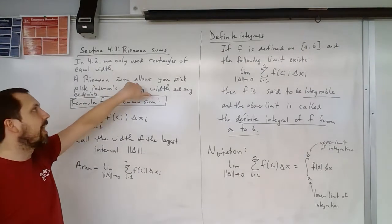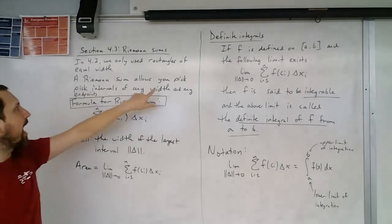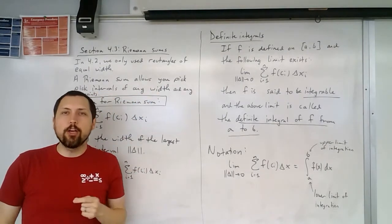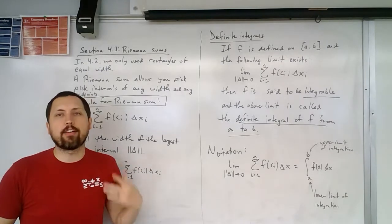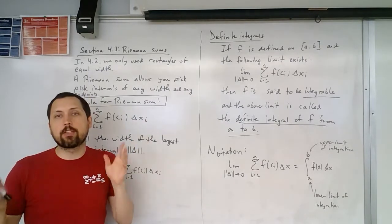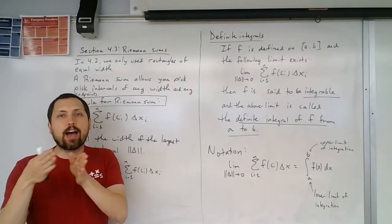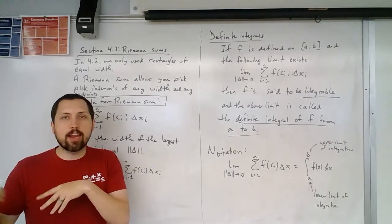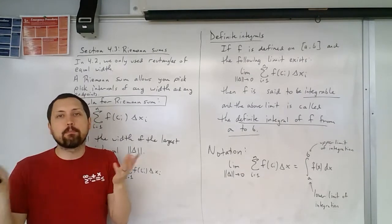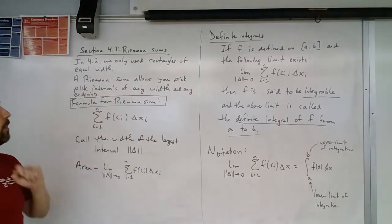But a Riemann sum is going to be very similar, except you can pick intervals of any width and any endpoints. So we were somewhat willy-nilly about our endpoints. We said you could choose the right endpoints and the left endpoints. The Riemann sum is going to help really clarify everything. It basically says you pick any way to divide the widths of your rectangles, and you pick any strategy of picking endpoints. You can even mix and match if you want. It doesn't really matter. That will define ourselves as a Riemann sum.